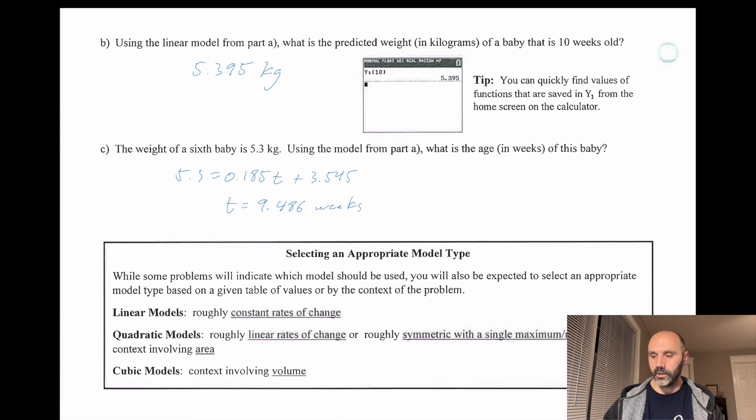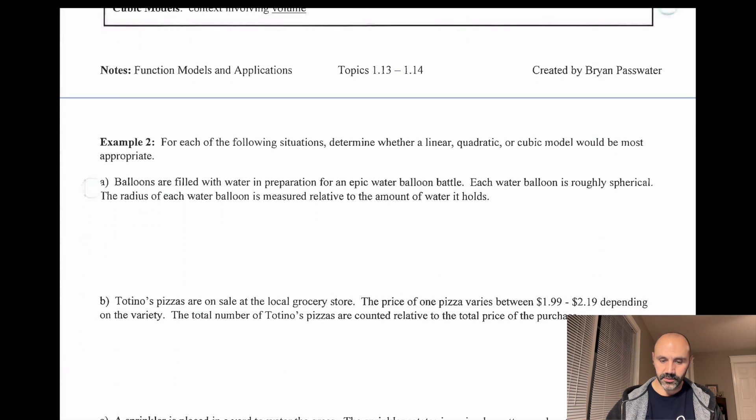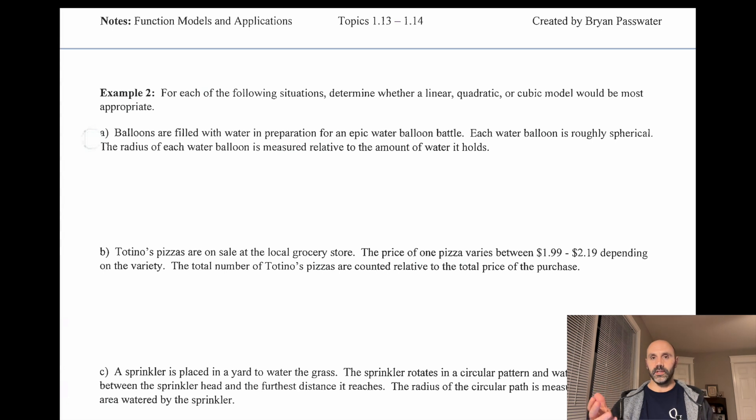So when you're choosing a model, a regression model or a best fit line, whatever you want to call it, we've got some different options. It could be linear, it could be quadratic, could be cubic. And it all depends on the shape of the function, the shape of the data that we get. So the idea is you plot the data and you can try out the different functions to see. And in Desmos, it's really simple to do that. But there are some examples here where you pick what you think it's going to be.